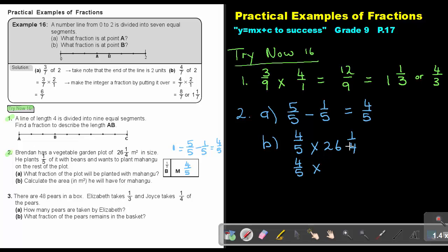So I'm going to say 26 times 4 plus that 1 is going to give me 105 over 4. And now, remember, you can cancel out. So it go in one time. That was a 4. It go in one time. 5 can go in one time. And this can go in 21 times. So if I multiply, I say 1 times 21, and that's 21, and that will be 21 square meters. So calculate the area. So for Mohangu, Mohangu will take up 21 square meters.